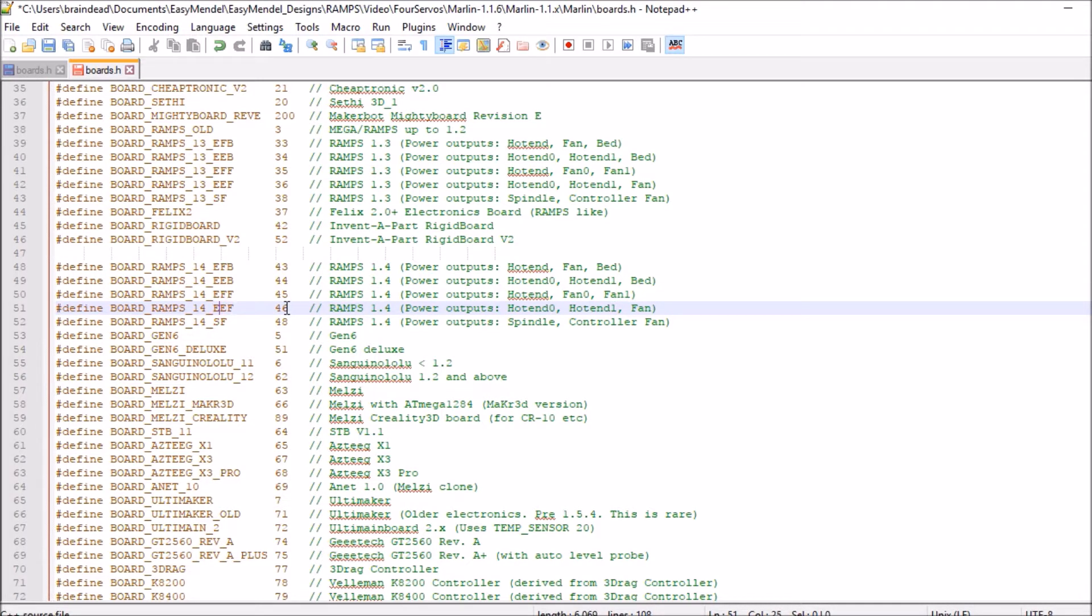And then we have extruder 0, extruder 1 or hotend 1, and then fan. The very last one that we have is spindle and controller fan, which is SF.